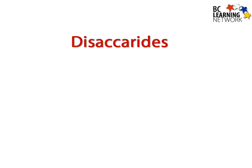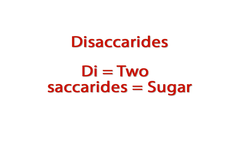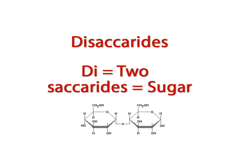The second of the three groups of carbohydrates that you will need to know are the disaccharides. 'Di' meaning two and 'saccharide' meaning sugar. So two monosaccharides bonded together make a disaccharide, and this is what it looks like — we have two six-sided carbon rings bonded together.